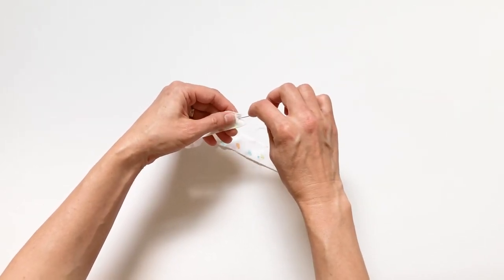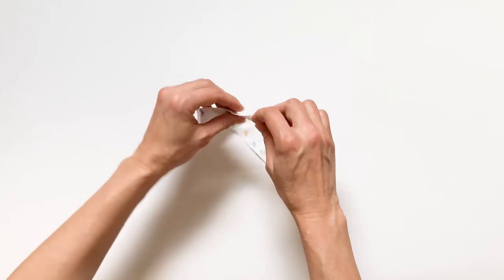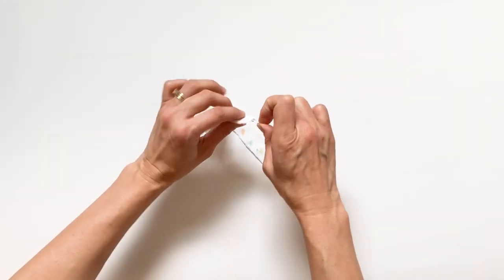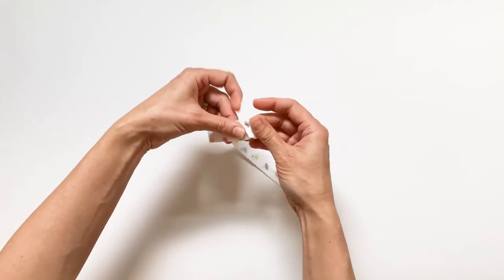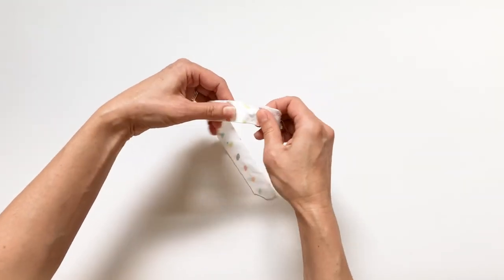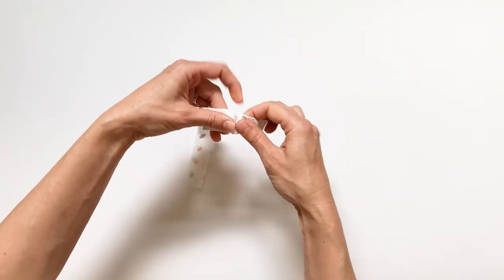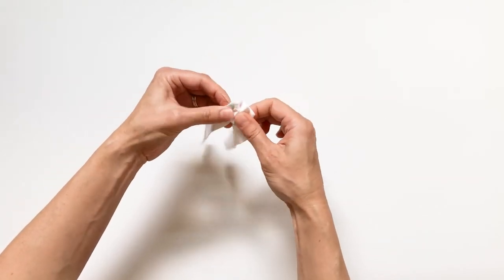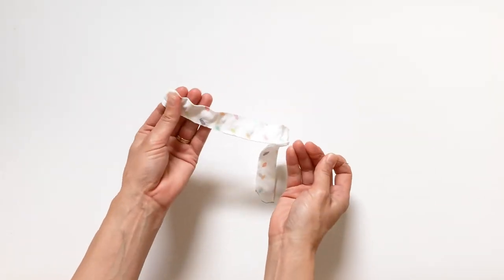Insert your needle one more time through the thicknesses, through the layers, making sure that you don't poke out to the bottom. So you're between those layers and you're feeding your needle all the way back to that opening.